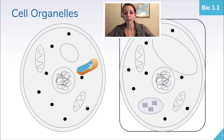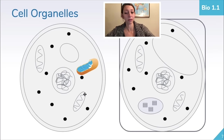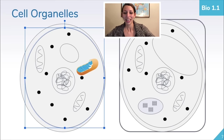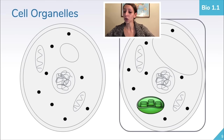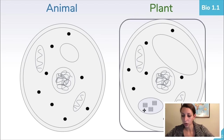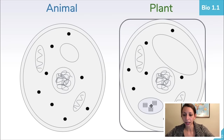Sometimes you'll see a mitochondrion drawn very technically, looking more detailed than a simplified oval with a squiggly line, so you need to be able to recognize both types of pictures. You might also see a chloroplast drawn with stacks of thylakoids, which are an important part of the chloroplast. For the Biology EOC, just be able to recognize the chloroplast as an important organelle with those stack-like structures, found only in plant cells.